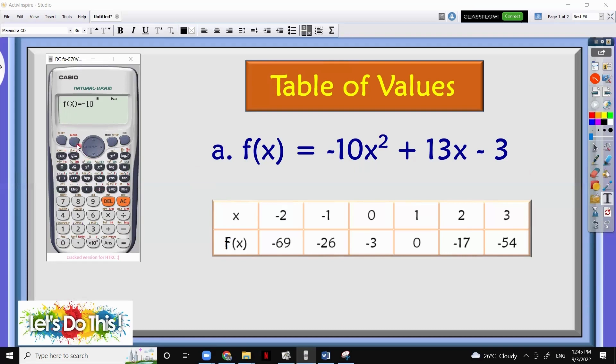Since it is color red, we're going to use the alpha, because they have the same color. Alpha, and then we have the x, square it, plus 13, and then x again, minus 3.